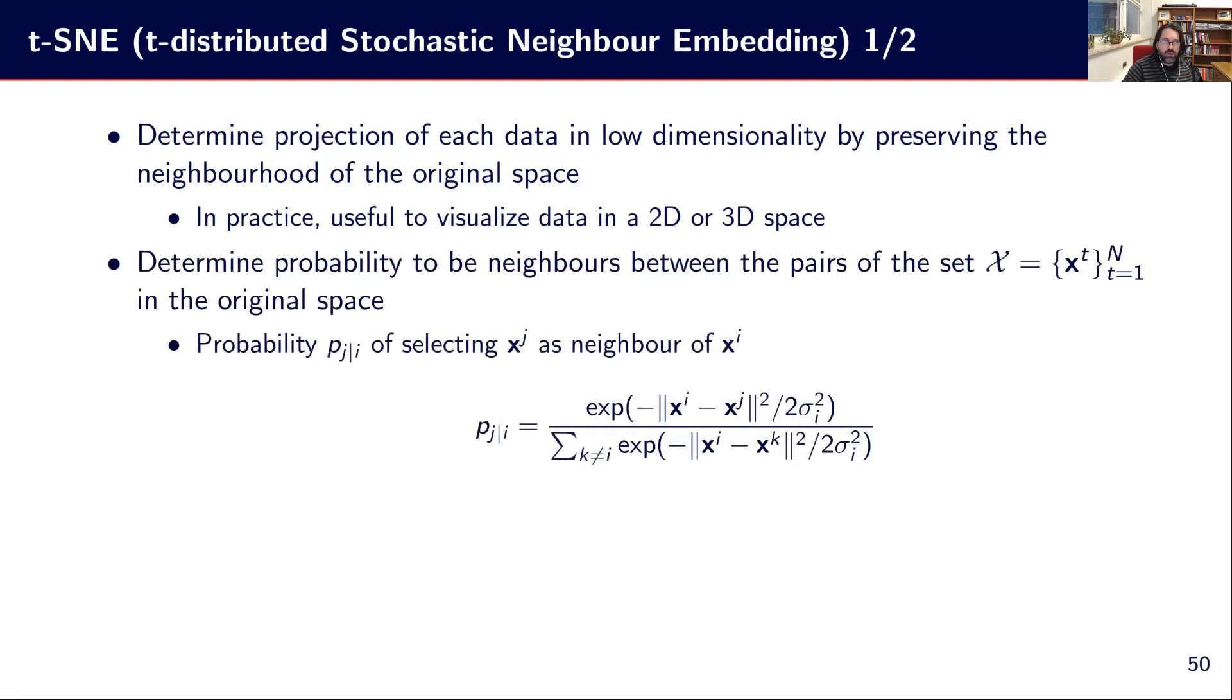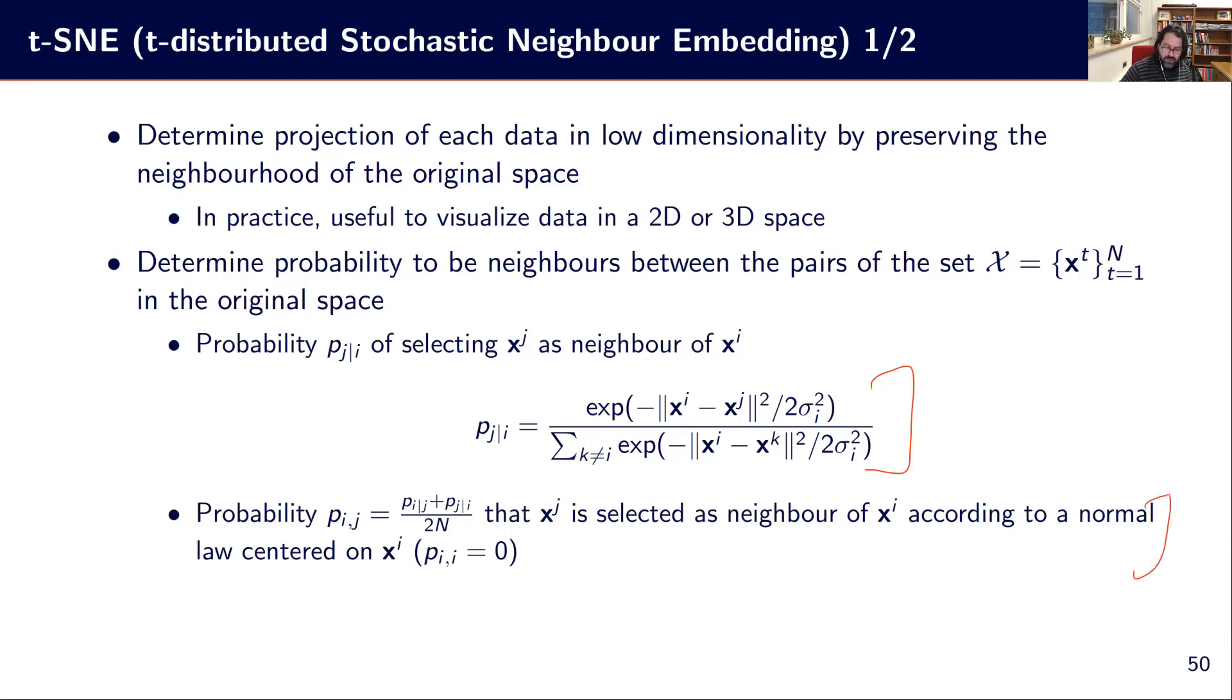So the idea is to determine the probability to be the neighbors between the pairs of the set. So we have some probability of saying that, well, X_j is the neighbor of X_i, for example. And this is given by this thing. So basically, we have this model here for the neighborhood probability. And we have also the probability of picking up that neighbor according to a normal loss center on X_i. So this is another probability. So we want to match these two. These are the probabilities that the two points are neighbors. And then we are adjusting some kind of sigma in there to make it fit, to make it work as well.